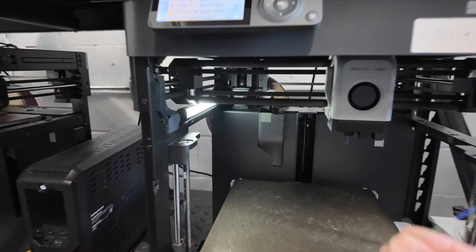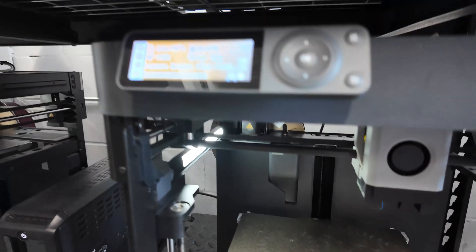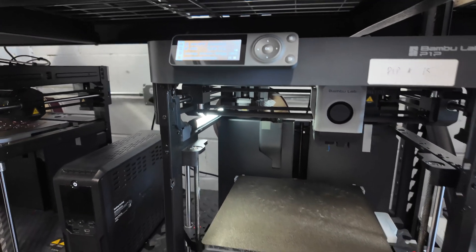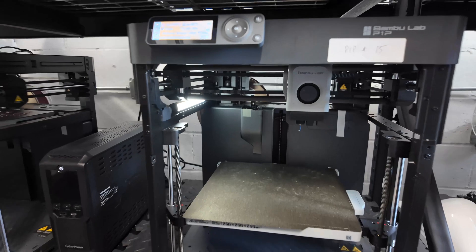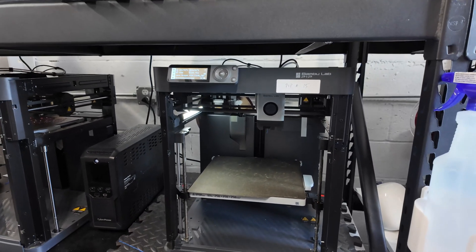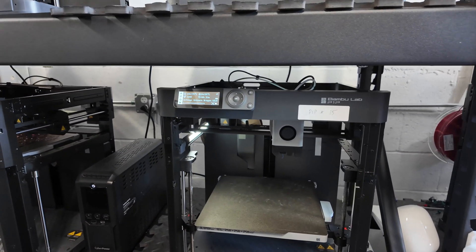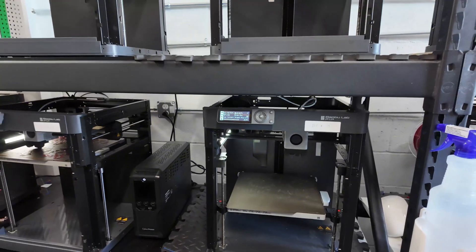All right. So we just loaded up new filament and we just started the print and cleaned off the build plate. So this is ready to continue printing. So that is my process on how I do maintenance on the Bamboo Lab P1P printer. I hope you guys enjoyed this video and I'll see you in the next one.